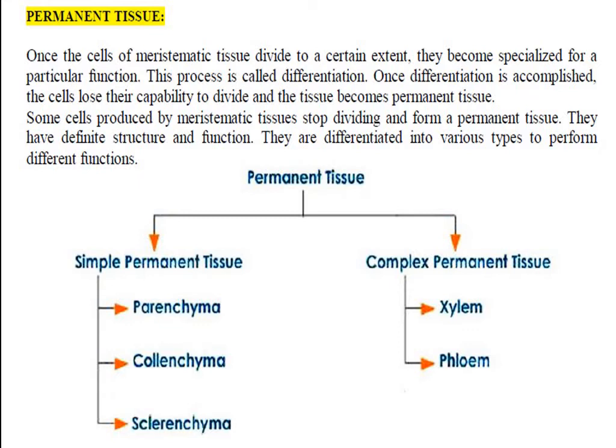Tissues which do not divide are called permanent tissues. They are already differentiated, already meant for a certain function. Such permanent tissues are divided into two types in plants: simple permanent tissue and complex permanent tissue. According to their various functions, they are differentiated into different groups.